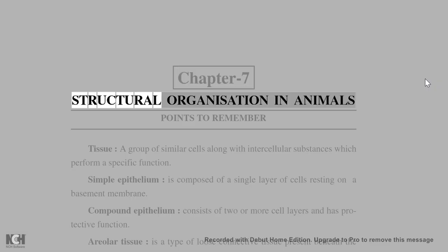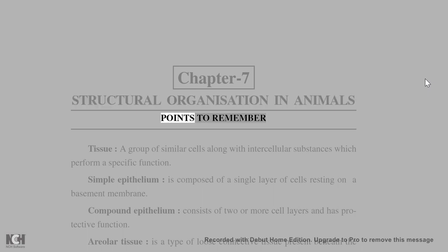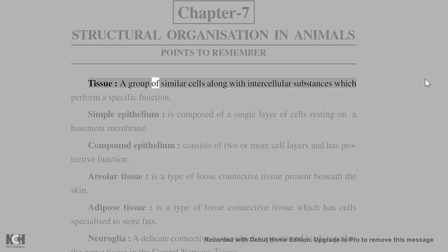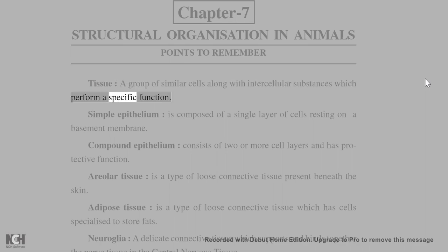Chapter 7: Structural Organization in Animals. Points to remember. Tissue: a group of similar cells along with intercellular substances which perform a specific function.